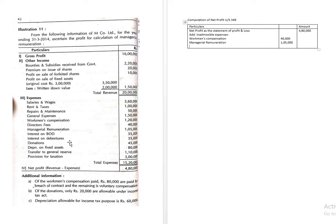Interest on debentures is also considered an admissible expense. For donation of rupees 45 thousand, the adjustment shows only rupees 20 thousand is allowable under the Income Tax Act. Since donation is considered for deduction purposes under income tax, the disallowable amount of donation is rupees 25 thousand.